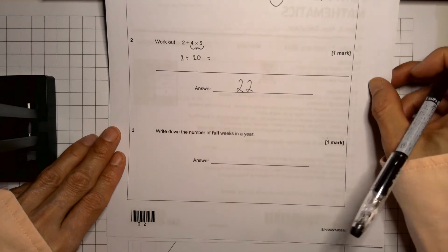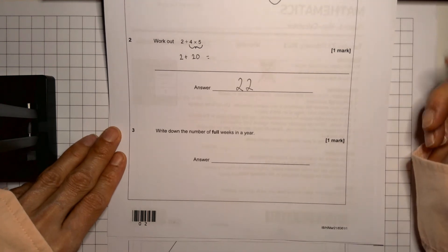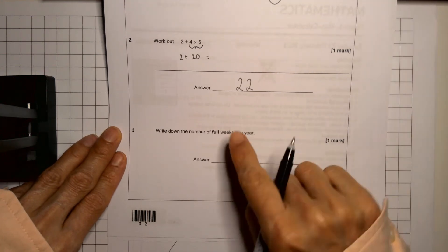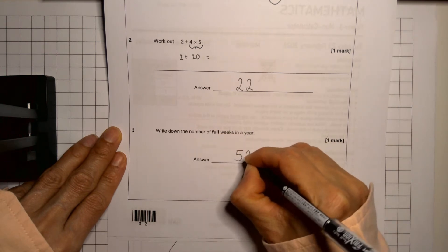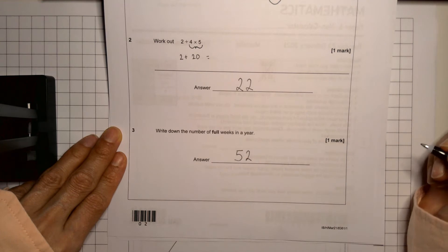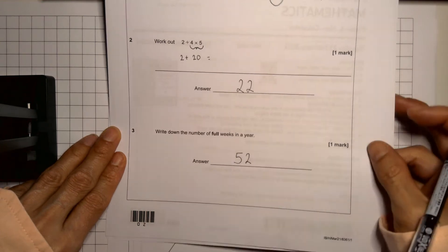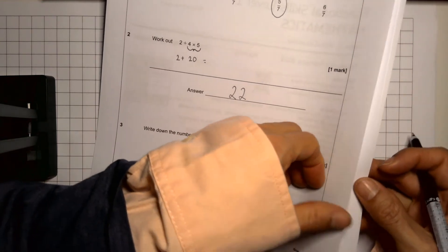Question three is a bit of what they might call common knowledge, what you need to know in a year. How many full weeks are there? And this is the case of just knowing it. There are 52 weeks in a year. There's our three marks for the first page. Let's move on.